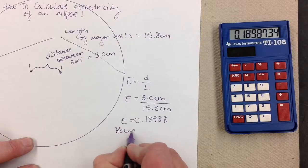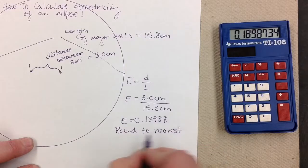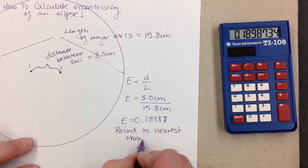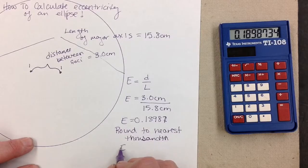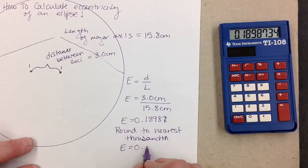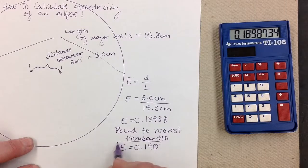And after you calculate the eccentricity, you have to remember to round to the nearest thousandths place. If you go back up to your value, you look at the 8 next to the right of the 9, and it's larger than 5, so I have to round my 9 up to a 10, and my value becomes 0.190.